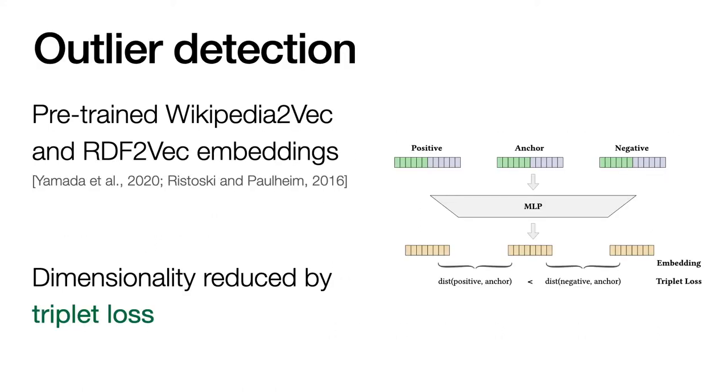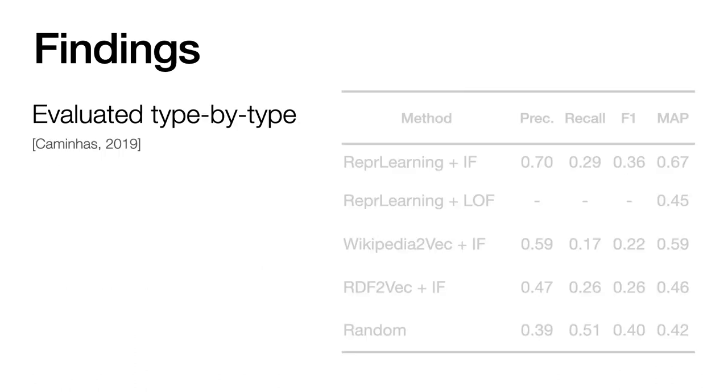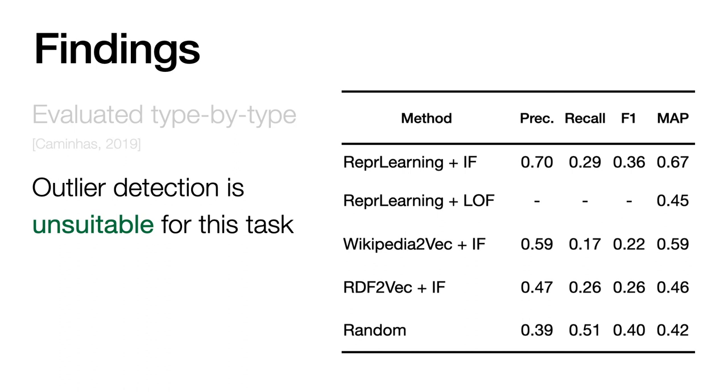We also evaluated unsupervised methods, like outlier detection. For the input of the outlier detection algorithms, we concatenated pre-trained Wikipedia2Vec and RDF2Vec embeddings. We also designed the neural network to reduce the dimensionality of embeddings, by optimizing with triplet loss. The evaluation was performed type by type, and the dataset is from a previous work. We tested different combinations of representations and outlier detection algorithms, and the results are not very satisfactory. So our conclusion here is, fully unsupervised paradigm is not a suitable choice for the task here.